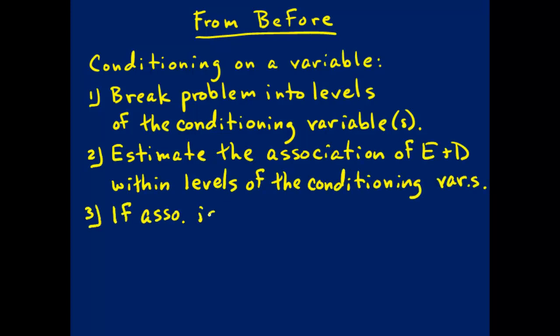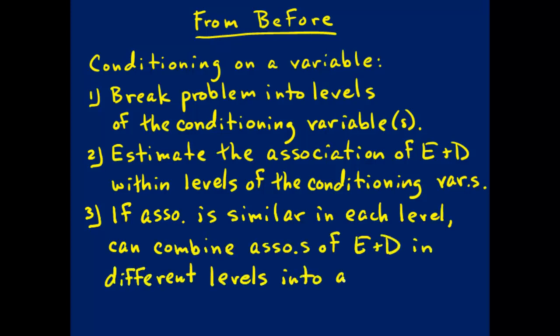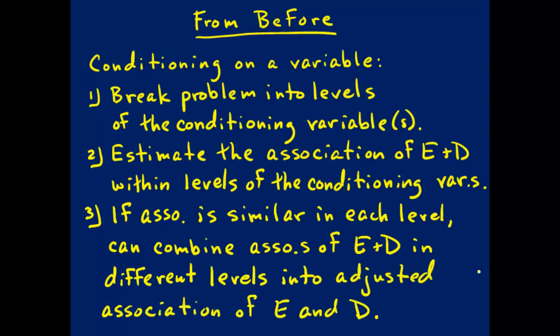Finally, if the associations between exposure and outcome are similar in each of those levels, then you can combine the associations of the exposure and the outcome in each of those levels into an adjusted estimate of the association. If you aren't clear about that, you should go back and review the videos about that.